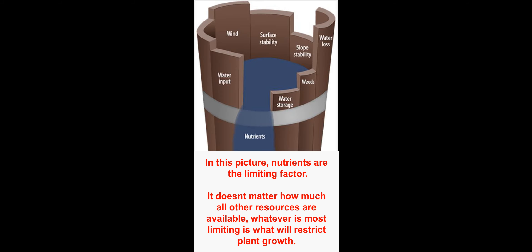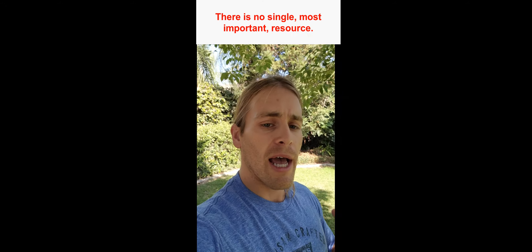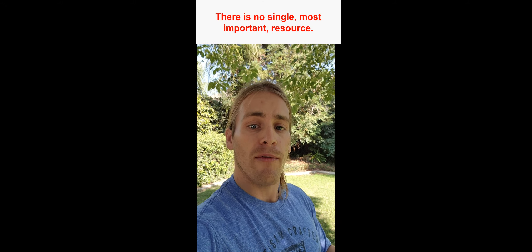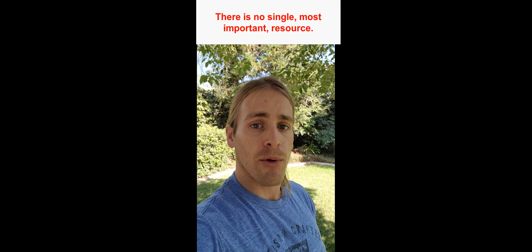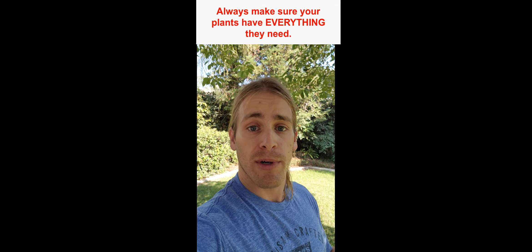Think of a wine cask with all the planks along the side. You can only fill that barrel up as much as the shortest plank. So even if they are all full height, but you have one that only measures about half the length of the barrel, once water or whatever you're filling it with gets to that point, it's going to start spilling over. The same applies to plant growth — whatever is your most lacking resource is going to hinder production.